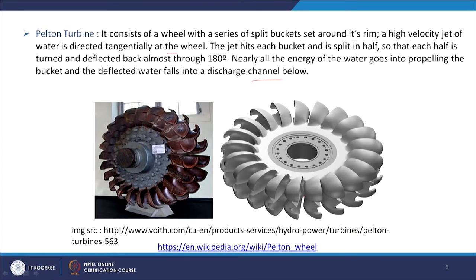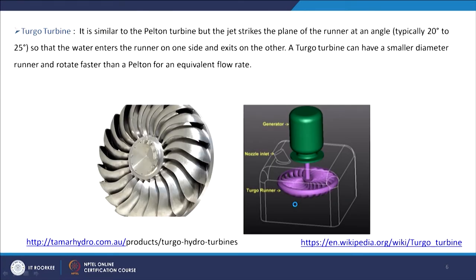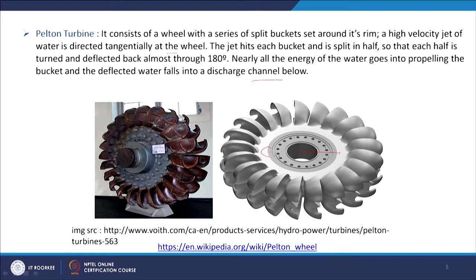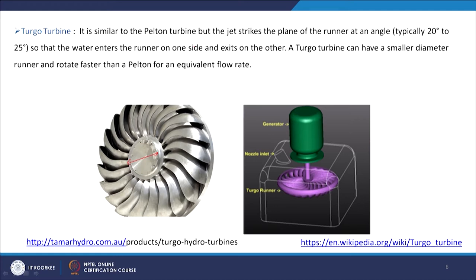Another type of impulse turbine is the Turgo turbine, similar to the Pelton but with different design. The diameter is smaller, and the jet strikes the plane of the runner at an angle — typically 20 to 25 degrees — so water enters the runner on one side and exits on the other. The Turgo turbine can have a smaller diameter runner and rotate faster than a Pelton turbine.